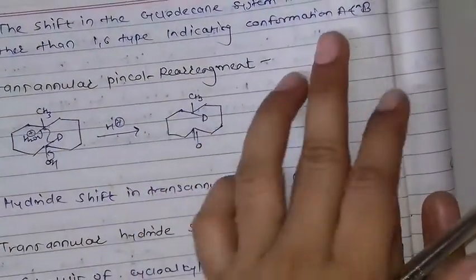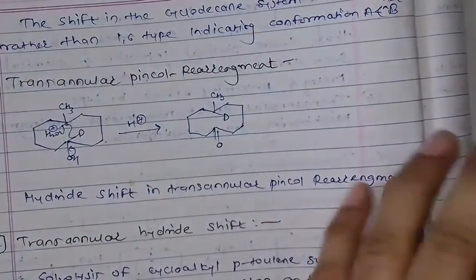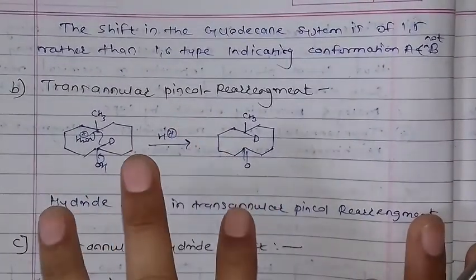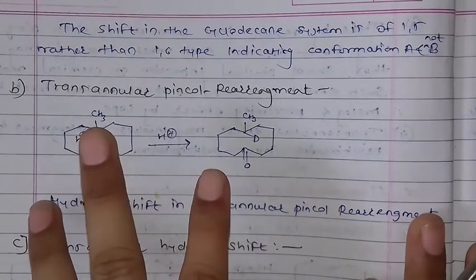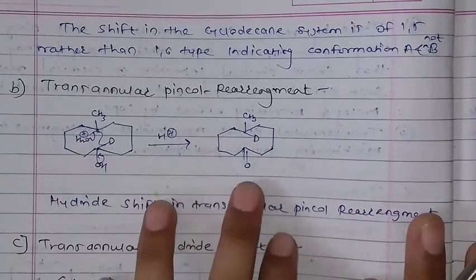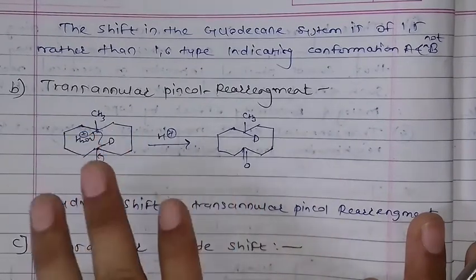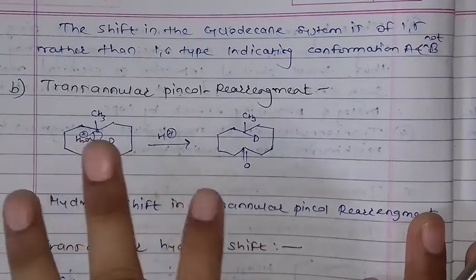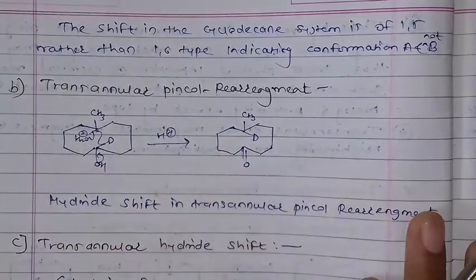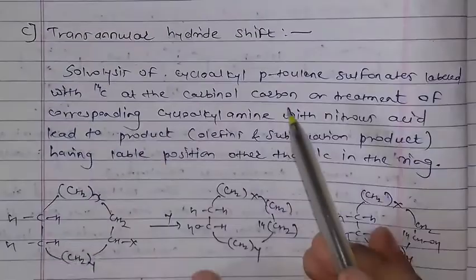This shift is a 1,5-shift rather than a 1,6-shift, indicating conformation A and not B — this is a pinacol rearrangement. We need to understand the rearrangement and simplify to the final product. First, we have to transfer the hydride. You can try to remove the transannular strain and simplify the mechanism. This is the last point: how much hydride shift we have to do.